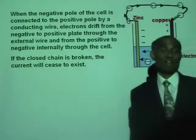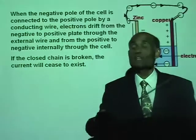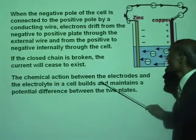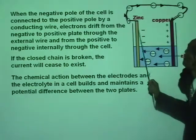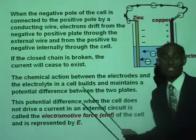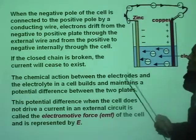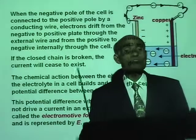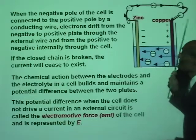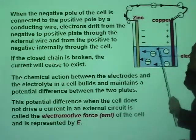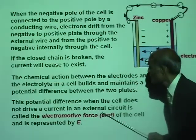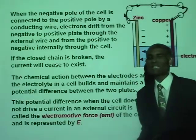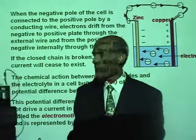Electric current will flow only in a closed path. The chemical action between the electrodes and the electrolyte in the cell builds and maintains a potential difference between the two plates. The potential difference that is built and maintained between the electrodes is called the electromotive force of the cell. Every cell has an electromotive force — it's a measure of the potential difference between the electrodes built and maintained as a result of the chemical action. Electromotive force is called EMF, and we represent it by the uppercase E.